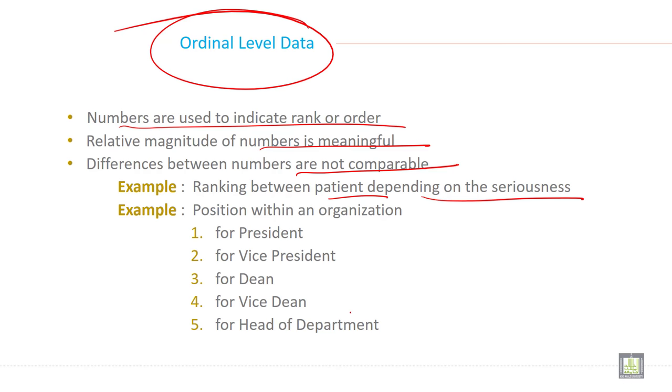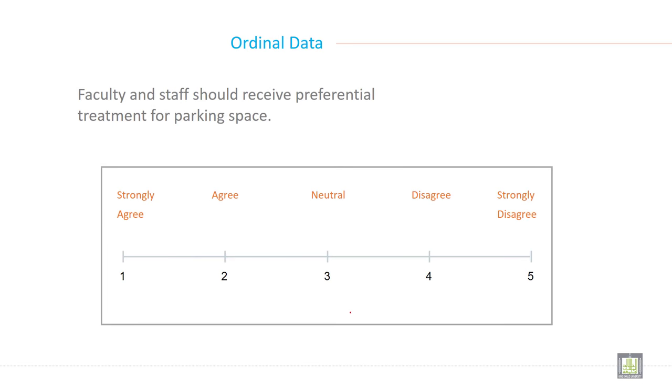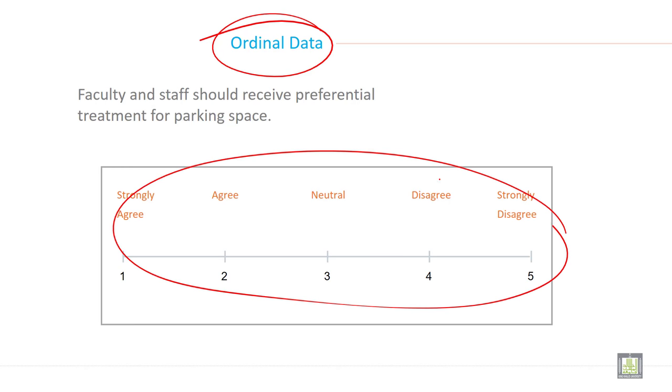It is just ranking. You cannot say which one is superior. Another example of ordinal data is faculty and staff should receive preferential treatment for parking space: strongly agree, agree, neutral, disagree, strongly disagree. All this is called ordinal scale.